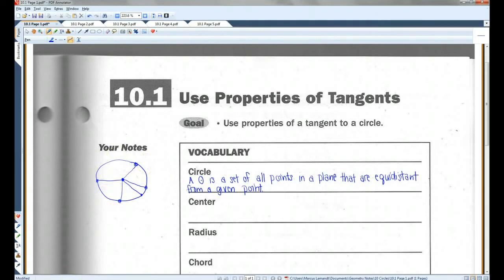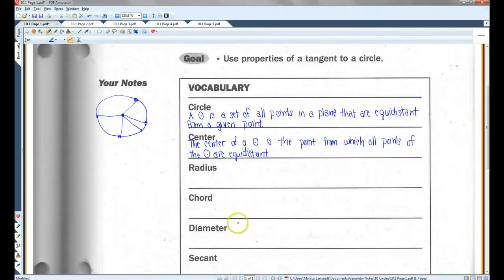The center of a circle is the point from which all points of the circle are equidistant. So this would be the center. Also, it's a good thing to note that whenever you're naming a circle, generally you name it with the center of the circle.